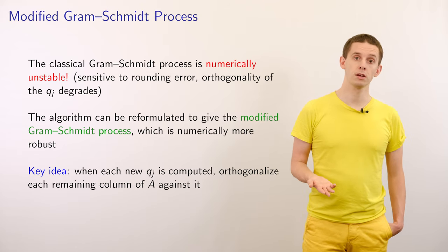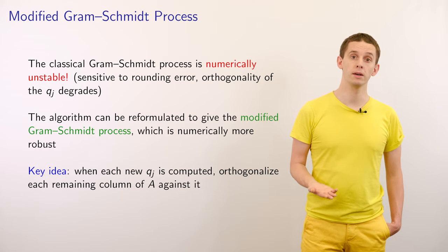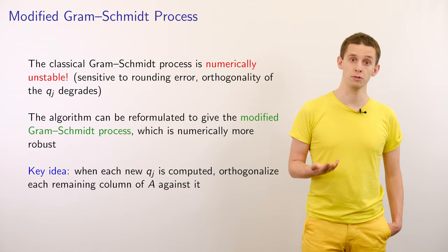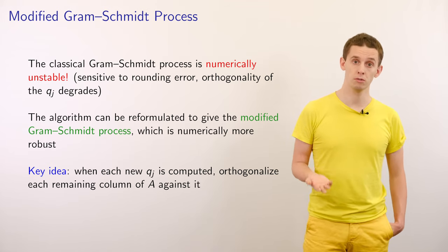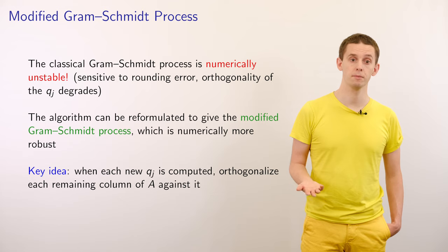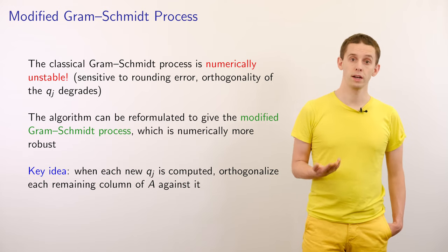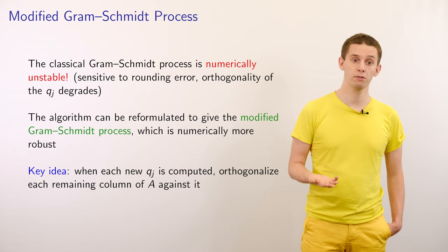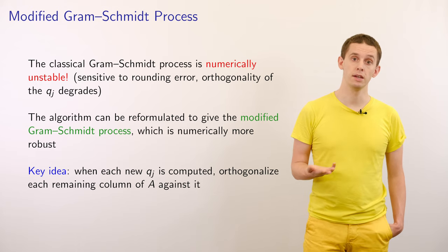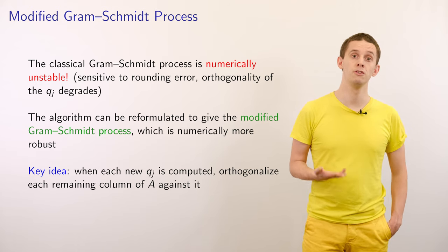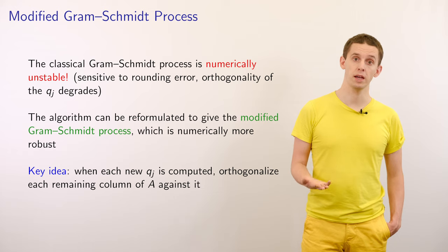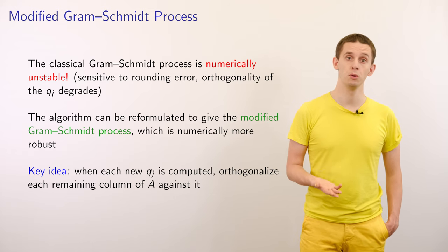The classical Gram-Schmidt algorithm turns out to be numerically unstable — it is sensitive to rounding error when computing projections of columns of A with respect to the previous q vectors. We can reformulate the algorithm into the modified Gram-Schmidt process, which is numerically more robust. The key idea is that whenever we compute a new vector qj, we immediately orthogonalize the remaining columns of A with respect to that new q vector.